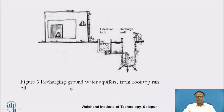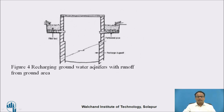The second method is recharging groundwater aquifers from rooftop runoff. Water collected from the top of the roof is collected through the downtake pipe, passing through a filtration tank where impurities are removed, and then it passes through a connection pipe to the groundwater, so recharge of groundwater takes place. Another method is recharging groundwater aquifers with runoff from ground area. Whatever water flows through the surface on the ground is collected by gravity, passes through the filter media, and enters the well, hence recharging the groundwater.